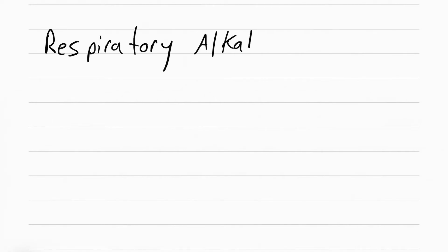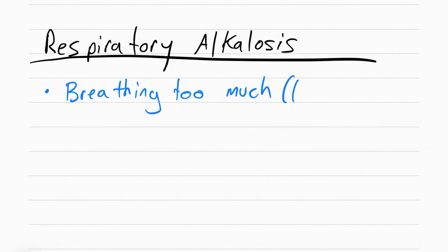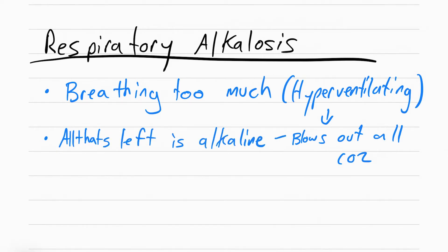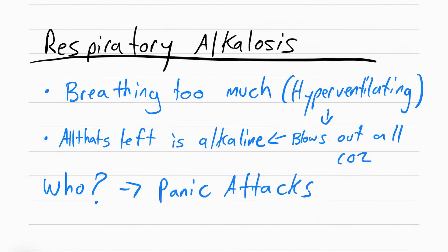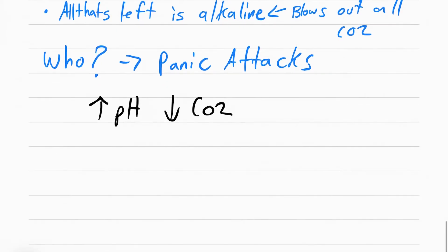Now let's talk about respiratory alkalosis. If respiratory acidosis was not being able to breathe, then respiratory alkalosis is breathing way too much. Patients with respiratory alkalosis are breathing so much that they're blowing out all their CO2. Since CO2 is acidic, if you blow out all your CO2 you lose all your acid and all you're left with is alkaline. Anyone having a panic attack or anxiety can breathe too much, losing all their CO2 and acid. The pH will go up and the CO2 will go down.